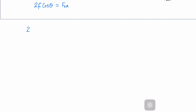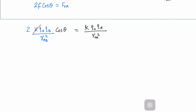Now place the values and solve. F = k·q_a·q_b / r_ab². Multiply by cos(θ) on the left side and set equal to k·q_naught·q_a / r_oa². Since k and k cancel, and q_a and q_a cancel, we get: 2·q_b / r_ab² · cos(θ) = q_naught / r_oa².